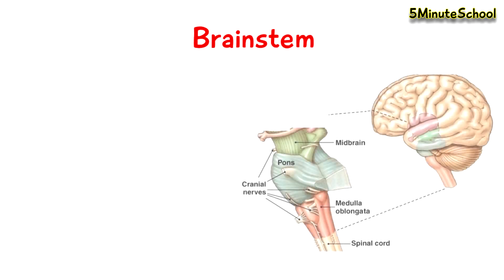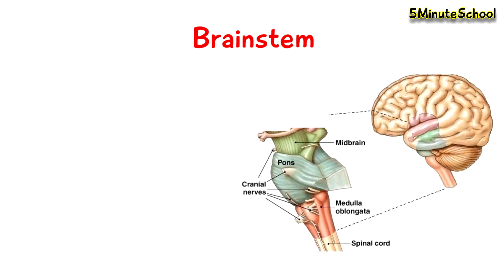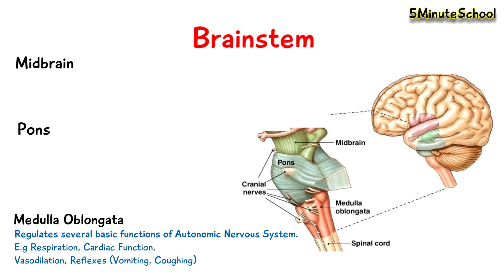The brain stem is kind of a continuation of the spinal cord, and in the brain stem we have the medulla oblongata, the pons, and the midbrain. The medulla oblongata is responsible for regulating several basic functions of the autonomic nervous system, and that includes respiration, cardiac function, vasodilation, and certain reflexes like vomiting and coughing.